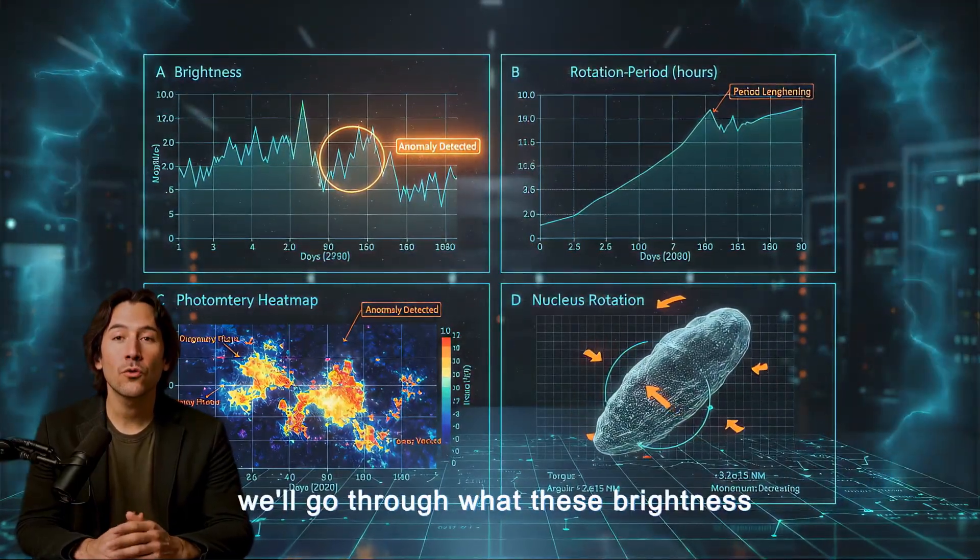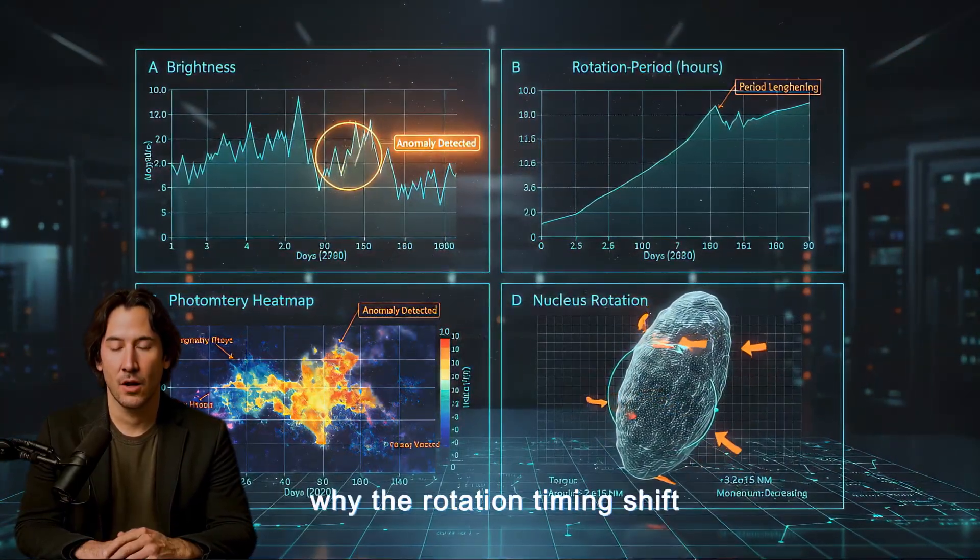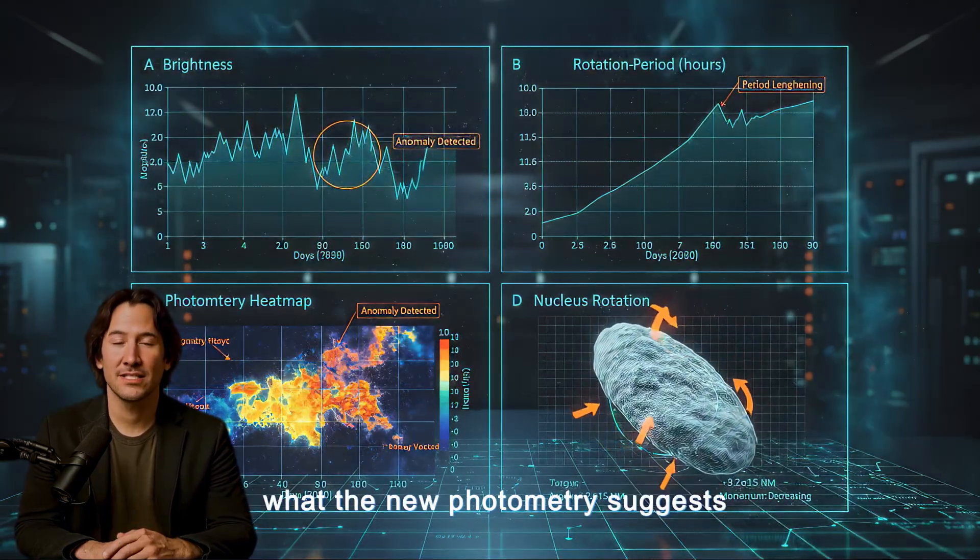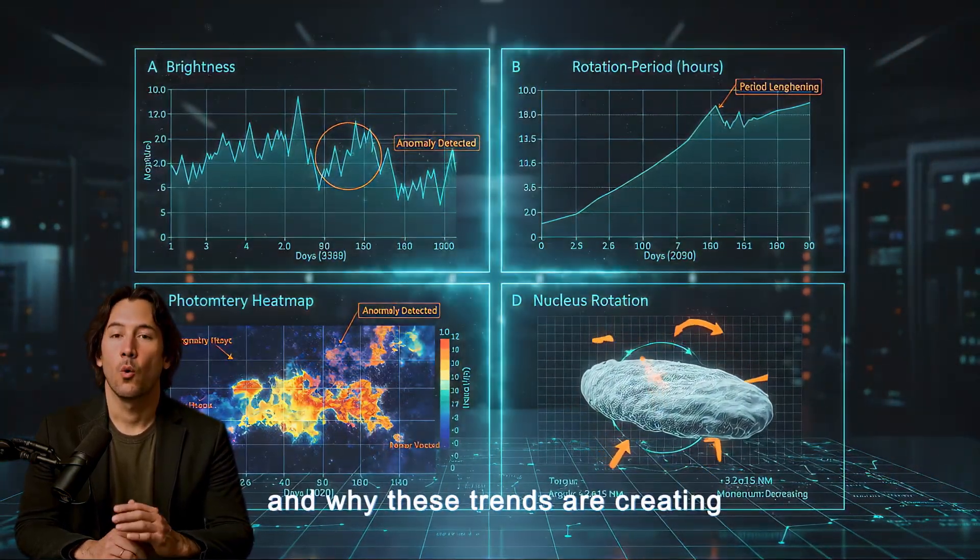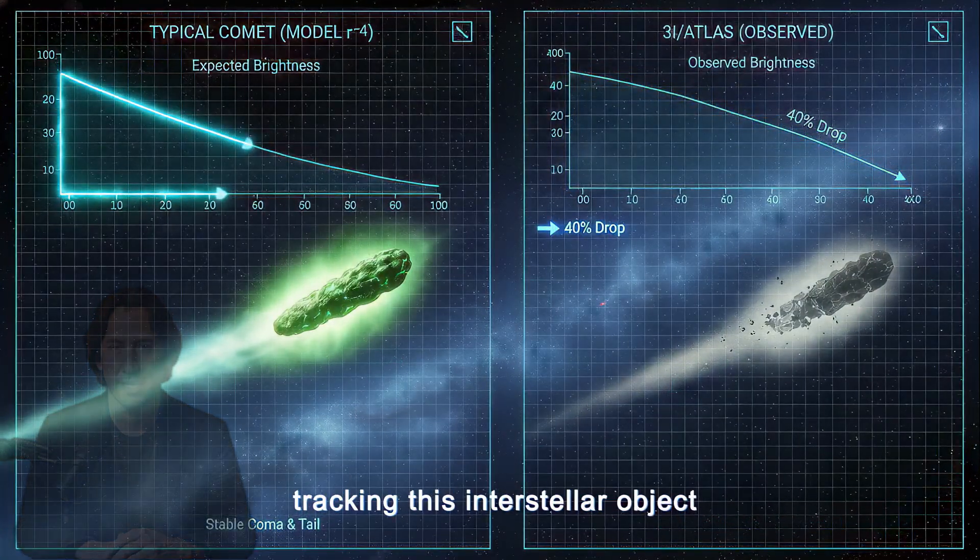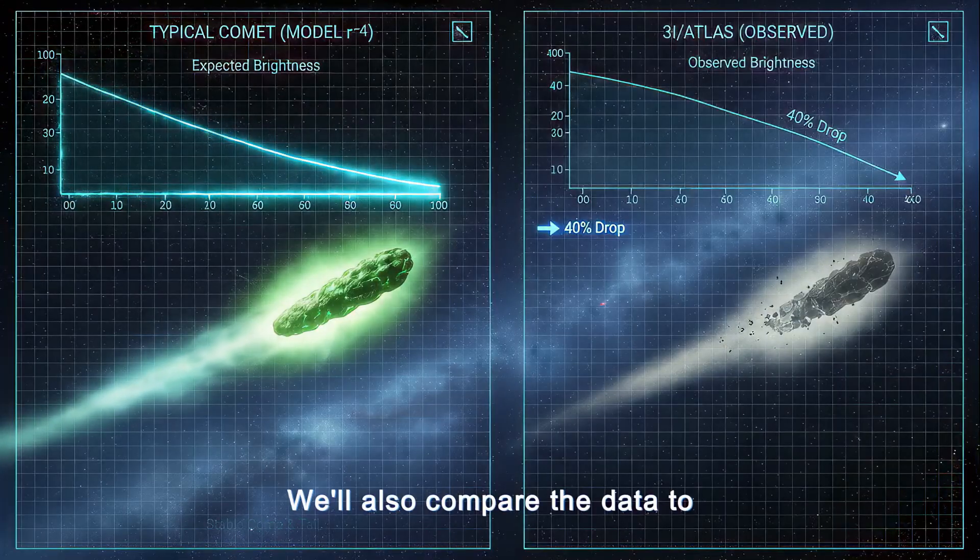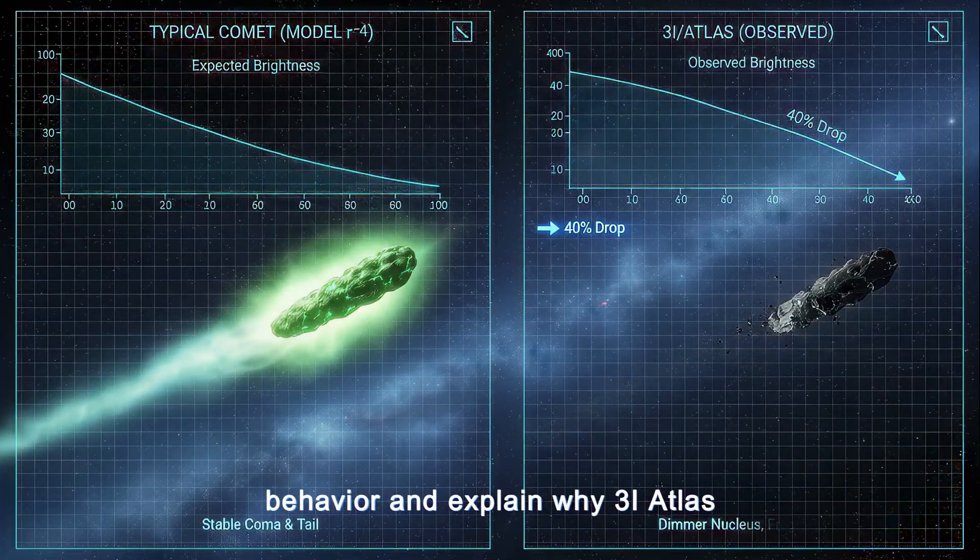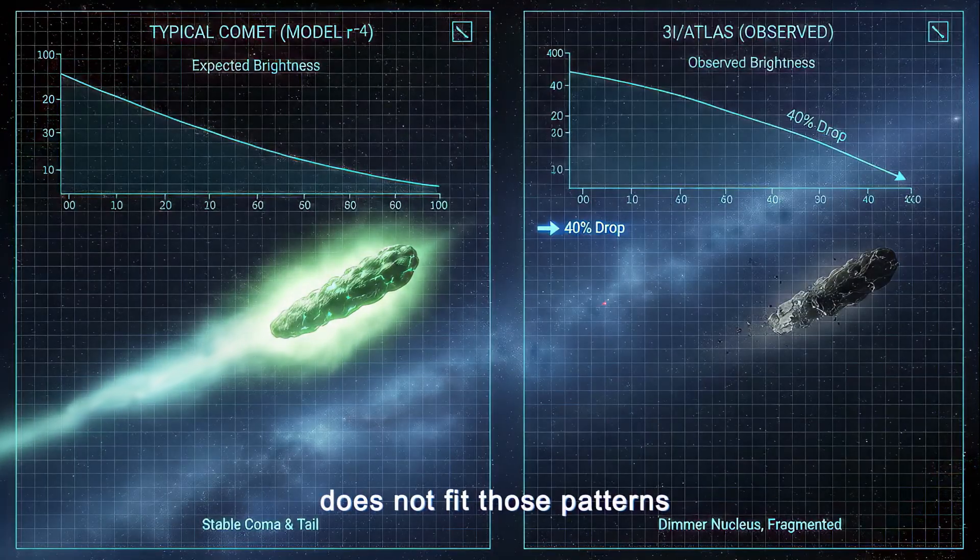In this analysis, we'll go through what these brightness changes mean, why the rotation timing shift matters, what the new photometry suggests about the nucleus, and why these trends are creating serious questions for astronomers tracking this interstellar object. We'll also compare the data to normal post-perihelion comet behavior and explain why 3i Atlas does not fit those patterns.